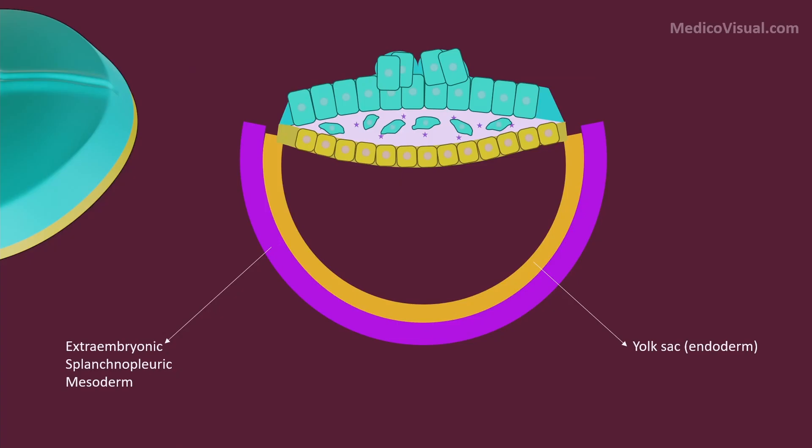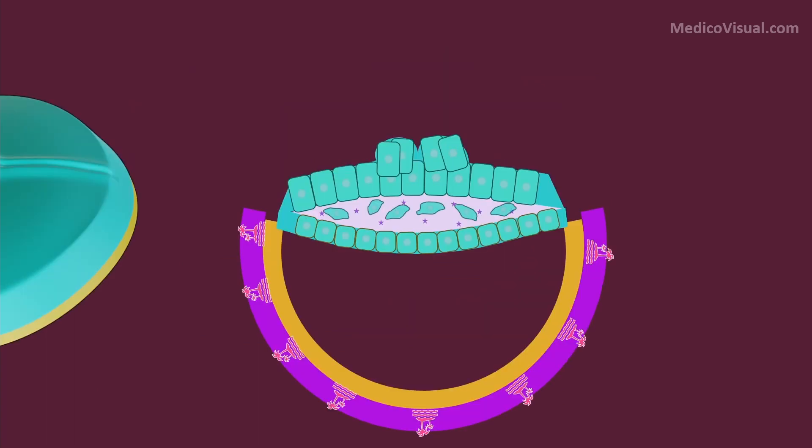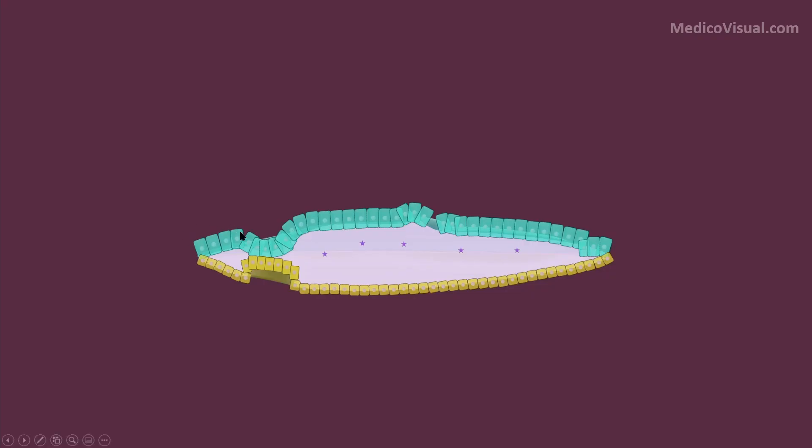They then displace the lower layer, that is hypoblast layer, thus taking its place. Some more cells come to lie in between the two layers, thus producing a third layer in between, hence forming a definitive three-layered germ disc. The embryo becomes a trilaminous structure except at two places: oropharyngeal membrane and cloacal membrane.